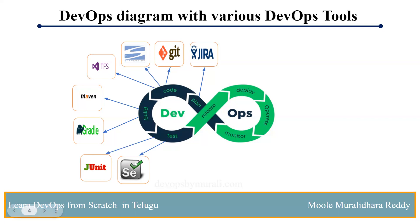The next thing is CI/CD tools. The majority of projects use Jenkins because it is free, easy to manage, and easy to use. My recommendation is to use Jenkins. Some projects have Jenkins as mandatory. Tools in this category include Jenkins, Bamboo, and TeamCity.